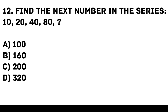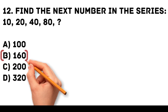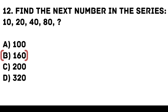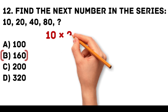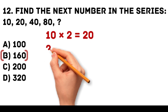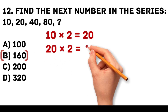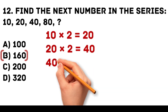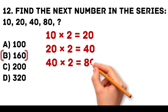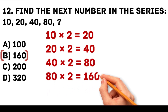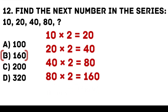Answer: B. 160. Each number in the series is multiplied by 2. 10 times 2 is equal to 20. 20 times 2 is equal to 40. 40 times 2 is equal to 80. 80 times 2 is equal to 160.